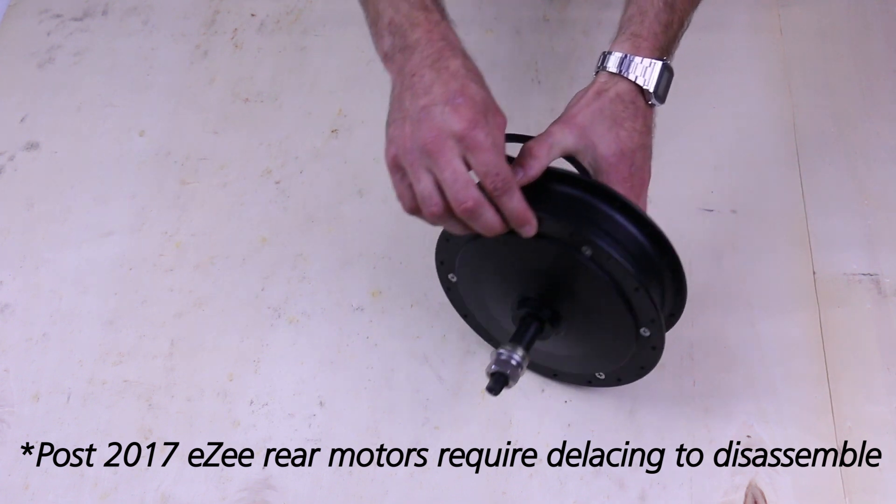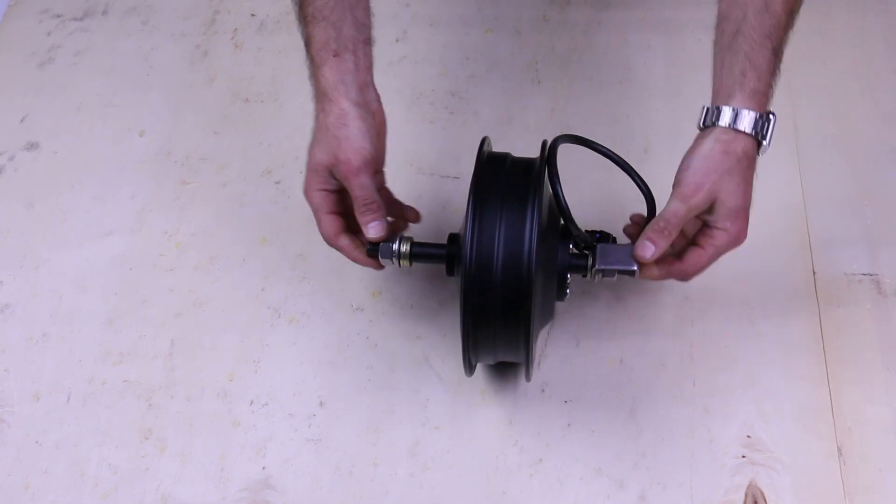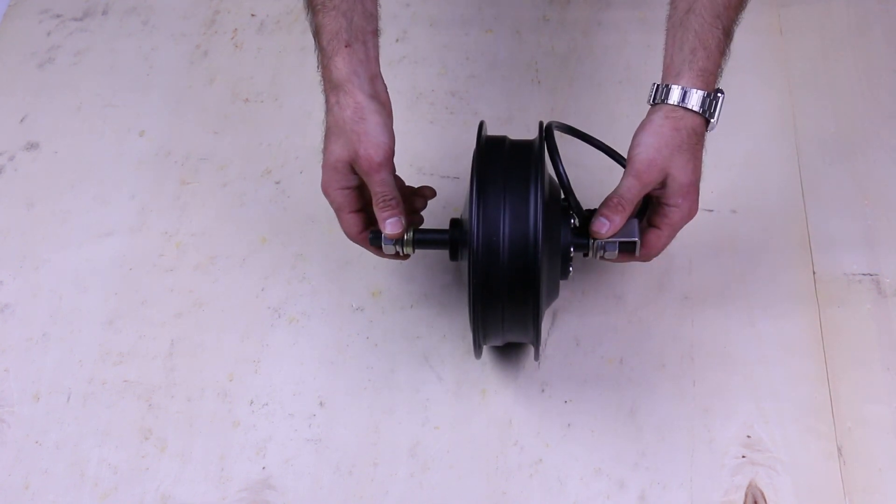So these screws here all hold together this spoke flange into the main body. So if you have service to be done on a post-2017 eZee rear motor, you will have to de-lace the wheel.